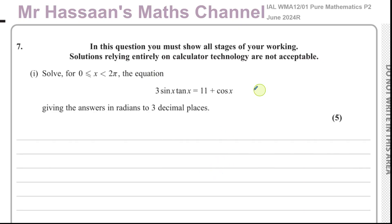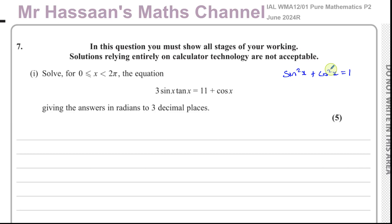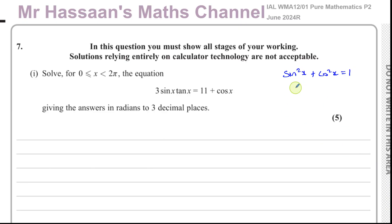If you can't see the whole journey from the beginning, take it step by step. I've got three sine x, tan x, and 11 plus cosine x. The two identities in P2 that we must know are: sine squared x plus cosine squared x equals one — note it's not sine x plus cosine x equals one, that's not true — and tan x equals sine x over cosine x. These are not given in the formula sheet; we must know them.